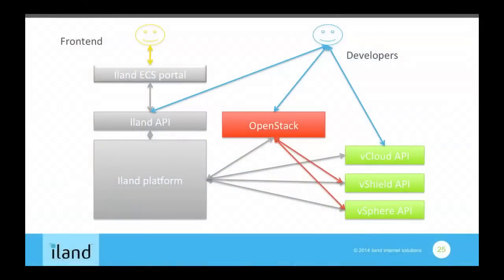Here's the architecture diagram showing exactly what's happening. On the left side, you have our portal - a web application or mobile application - and our own proprietary API that gives access to the platform. The platform is responsible for connecting to the different APIs. Right now we're leveraging the vCloud API, the vShield API, and the vSphere API behind the scenes. The portal directly hits those, and external developers and customers can use our API as well, or they can use the vCloud API directly - we open them the same way.